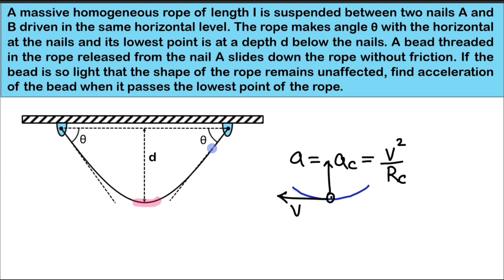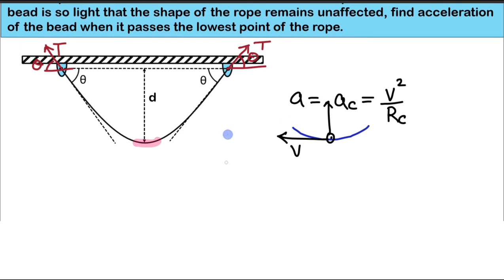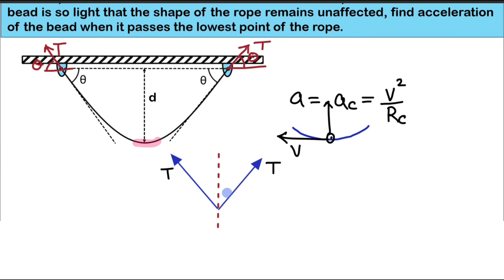First, let's make a free body diagram of the complete rope. On the two ends, a tension force T acts along the tangential direction, making angle theta with the horizontal. Since the two pegs are symmetrical, drawing the net force diagram shows the two tension forces T and T each making angle theta with the horizontal, so the angle with the vertical is 90 minus theta for both.